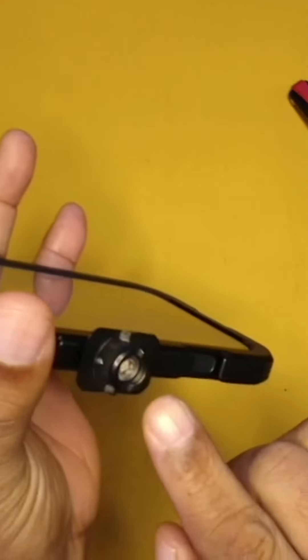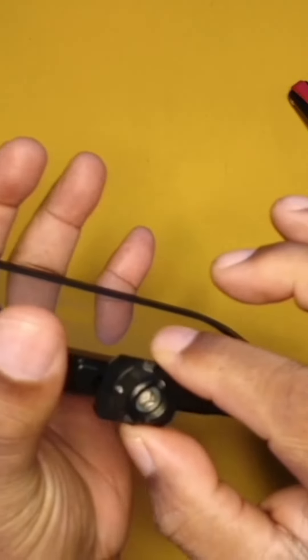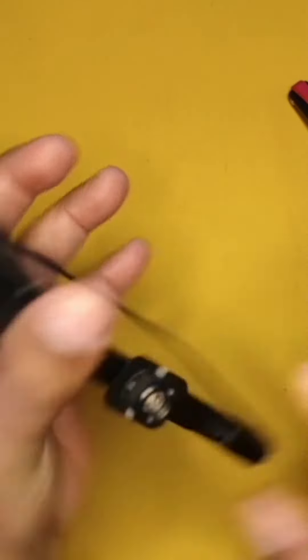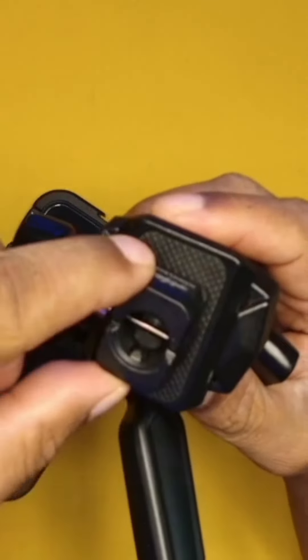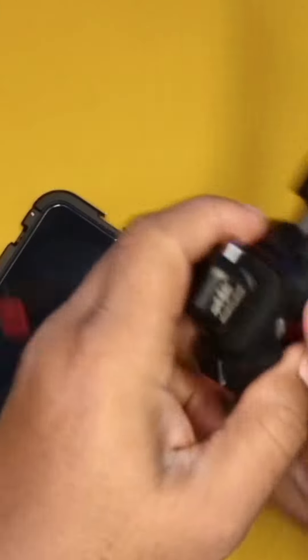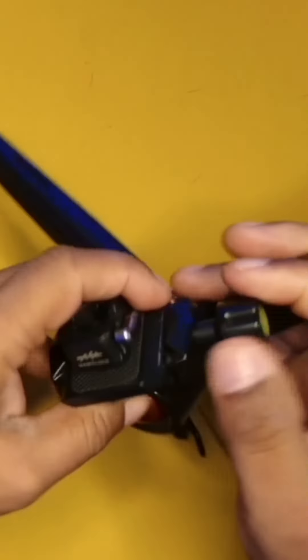I also have the HawkLock quick release system on here. This is the mount, and I have the HawkLock also on this little desktop tripod. That's connected via this quick release plate as you see here.